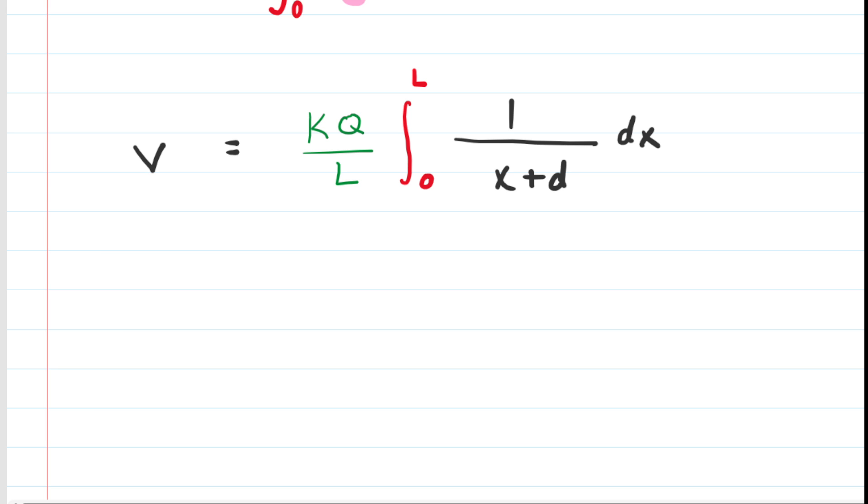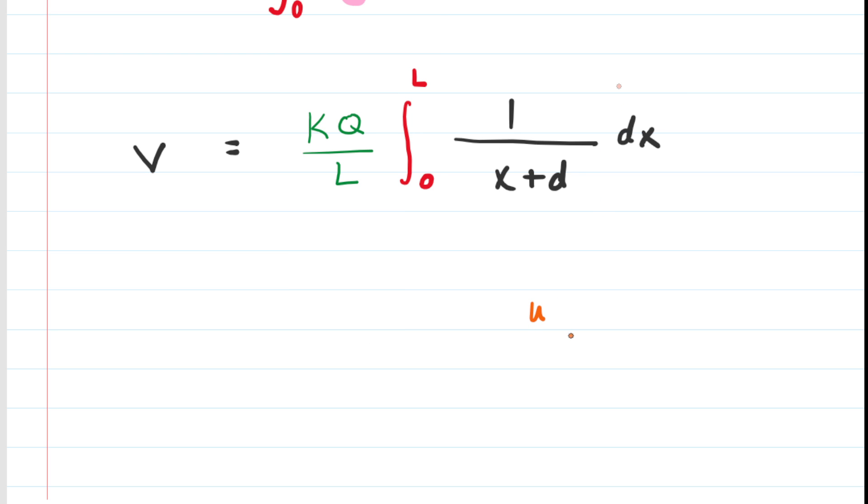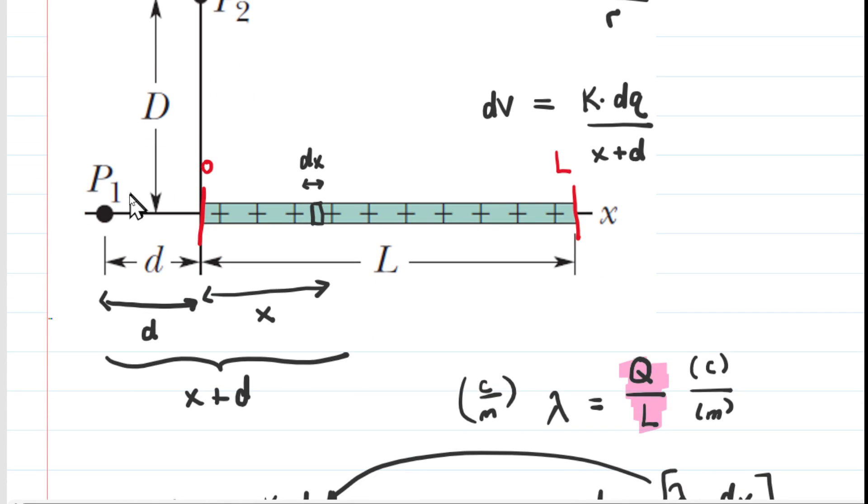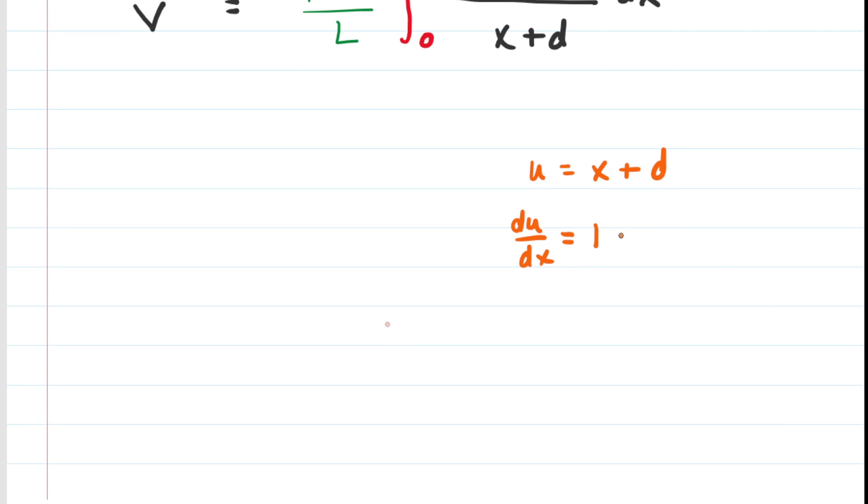So perhaps the best way for us to integrate 1 over x plus d is to use a u substitution. So you probably learned about this in calculus. And we're going to let u equal x plus d. And then what we do is we take the derivative. Now, notationally, the derivative of u is du dx. The derivative of x is just 1. D is a constant as well. Remember, little d was the distance from the origin to point P1. That distance is not changing. We're not sliding P1 around. So that d is a constant. The derivative of a constant is 0. So you have 1 plus 0. So that's just 1. Multiply both sides by dx and you get du is equal to dx.